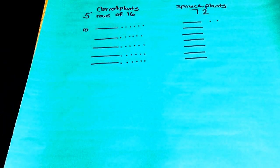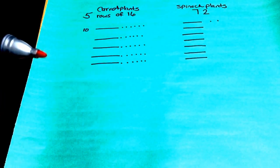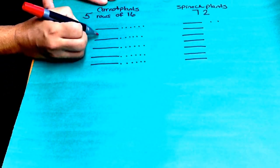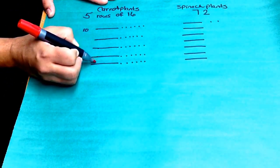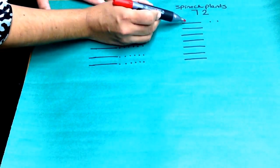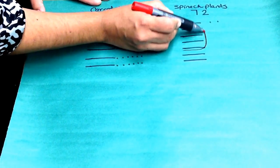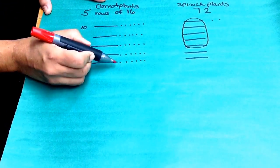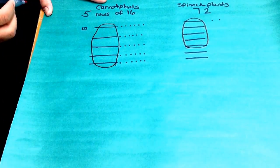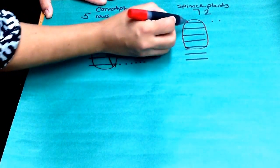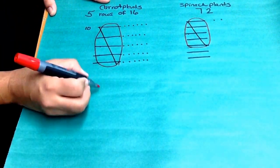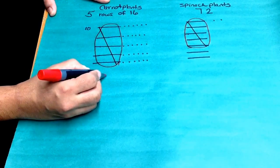I can now regroup my base 10 blocks and exchange them for other base 10 blocks if I need to. So right here we're going to have 10, 20, 30, 40, 50, 60, 70, 80, 90, 100. When I regroup these 10 rods, I can now exchange them for a 100 flat.